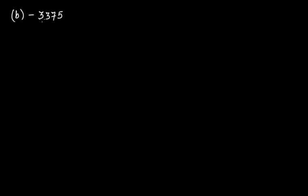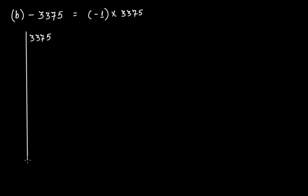Now we have another number: minus 3375. Same approach — write it as minus 1 multiplied by 3375. Let's find the prime factorization of 3375. First check divisibility by 3: 3 plus 3 is 6, plus 7 is 13, plus 5 is 18. Yes, this number is divisible by 3. So 3375 divided by 3 gives 1125, divided by 3 gives 375, divided by 3 gives 125.